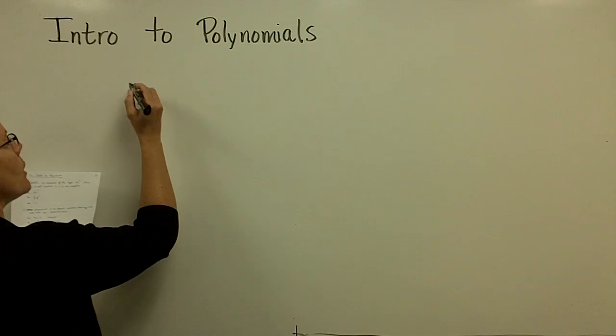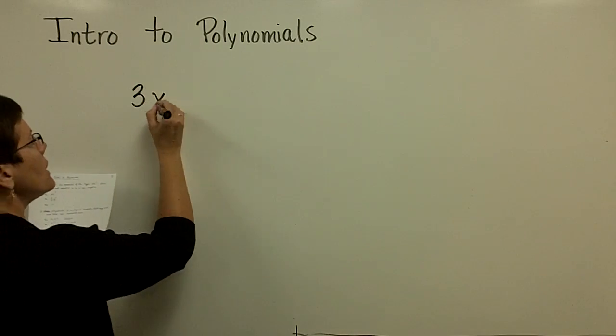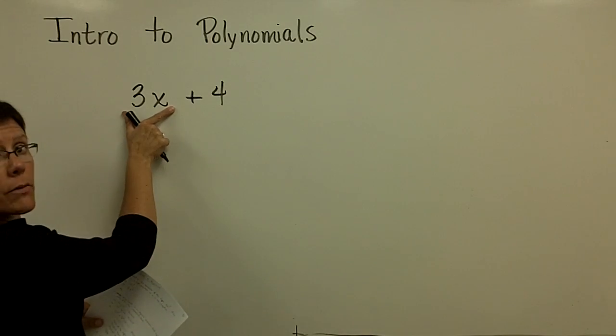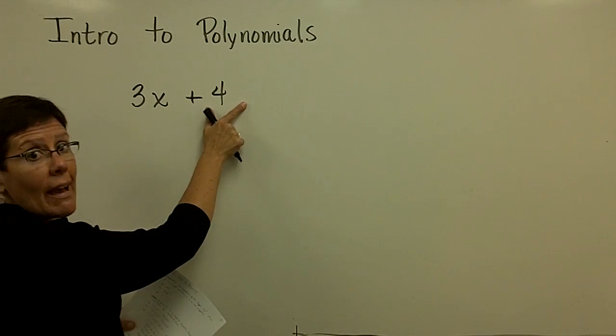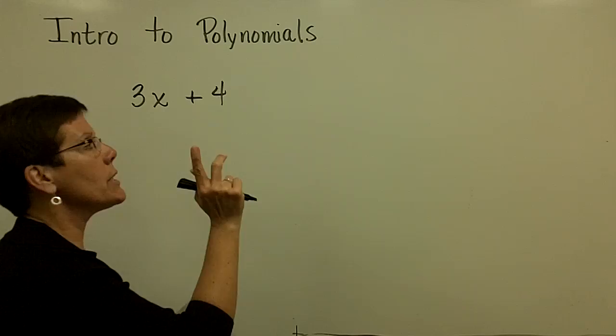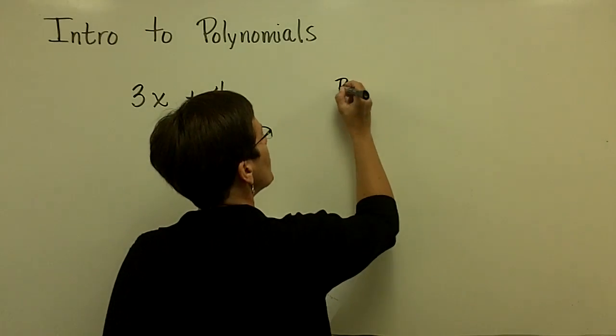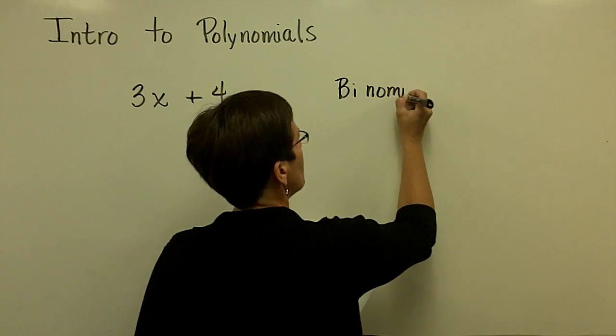I might have a polynomial that is 3x + 4. So this is a monomial, 3x. So is that. There are two monomial terms in this polynomial separated by this plus sign. We often call this one a binomial.